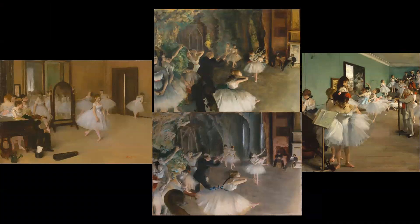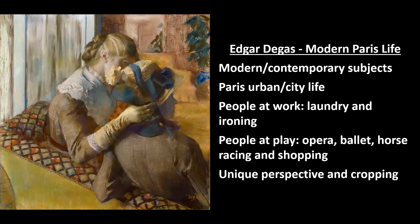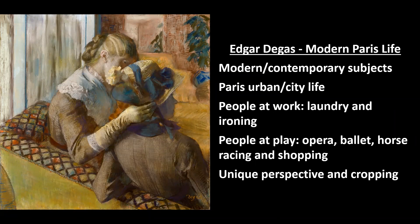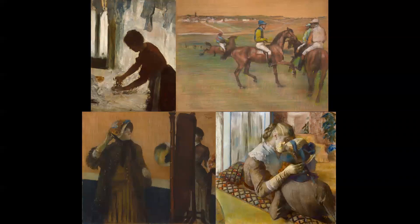Beyond dancers, Degas frequently focused on what we'd call modern or contemporary city and urban life in Paris — things taking place at that time, not history subjects. He depicts people in urban environments, not out in the countryside. He has people at work: laundry, ironing, things like that. He also depicts people at play: attending the opera, ballet, horse racing, even going shopping. One of the things to look for in Degas's work is the unique perspective and cropping.